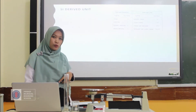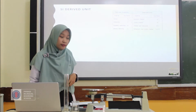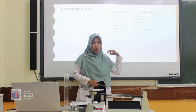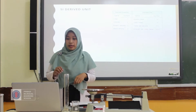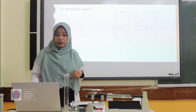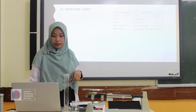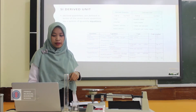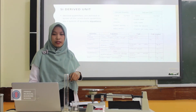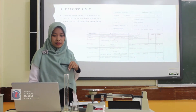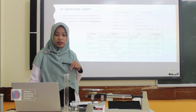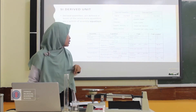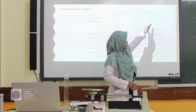For derived units, we can combine two or more basic units — we call these derived or unified units. For example, area uses two length measurements: length times length, which is meter times meter, equal to meter squared.